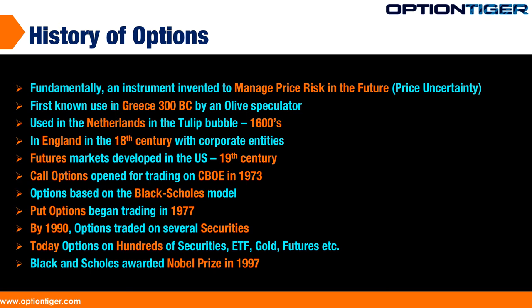Let's look at a brief history of options. Options are a very practical instrument that humans required at various points and situations. The first known usage of options was in Greece around 300 BC by an olive speculator. The speculator felt that the upcoming olive season was going to be very good. On the other side, the olive farmers were always uncertain about how the season was going to be, and they'd like to have some certainty as to what money they could get for the harvest. So this speculator issued contracts to all the olive farmers that he would buy their harvest for a certain amount, and sure enough, the olive speculator was right in his judgment.